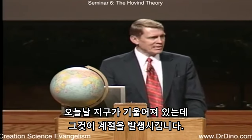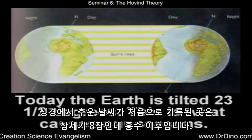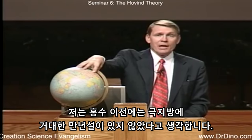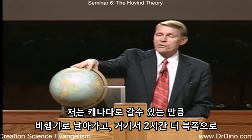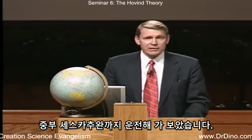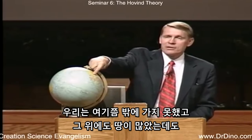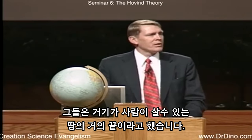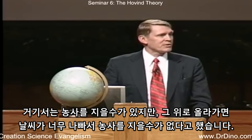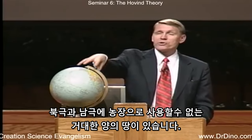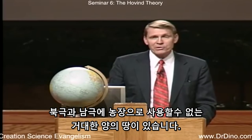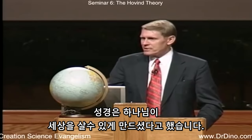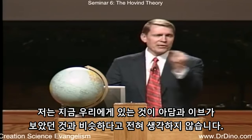Today the earth is tilted and that causes the seasons. The first mention of cold weather in the Bible is in Genesis chapter 8, after the flood — I doubt they had huge polar ice caps before the flood. There is a huge chunk of planet earth, north and south near the poles, that is simply unusable for farmland. The Bible says God formed the world to be inhabited. I don't think what we have today is anything similar to what Adam and Eve saw.